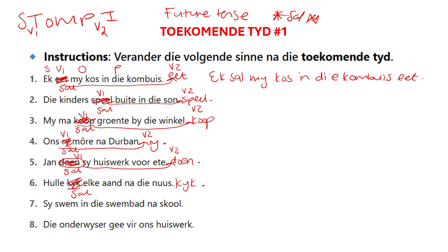Let's test it two more times. 'Sy swem in die swembad na skool.' What is my verb? 'Swem.' So my verb goes to the end of my sentence in my toekoms tyd, and my verb 1 changes to 'sal'. 'Sy sal in die swembad na skool swem.' Full stop. Last one: 'Die onderwyser gee vir ons huiswerk.' My verb 1 becomes my verb 2 in the toekoms tyd, and then verb 1 will now be 'sal'. 'Die onderwyser sal vir ons huiswerk gee.' Full stop.